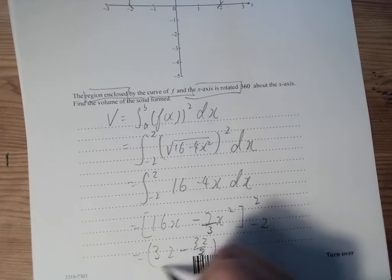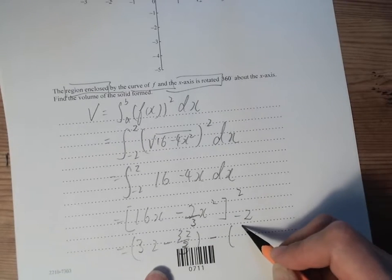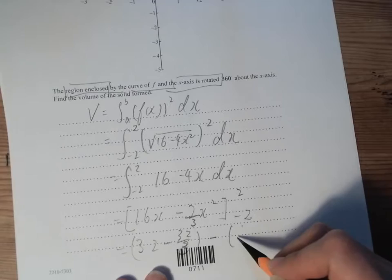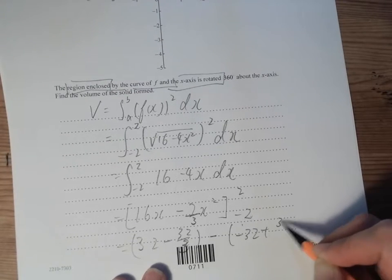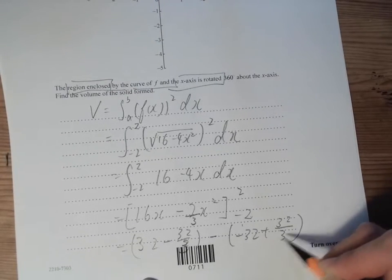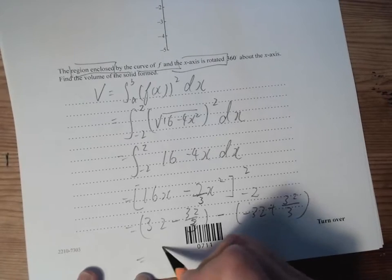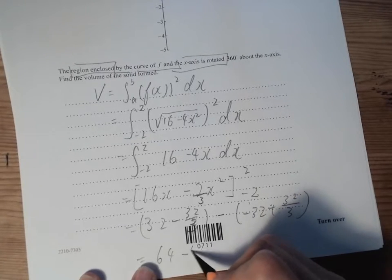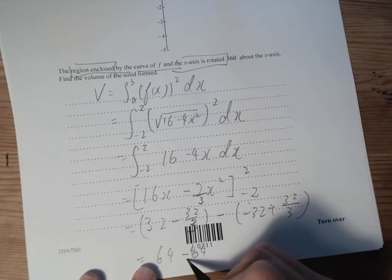So it should be over 3, minus negative 2. So we have -32 plus 32 over 3 there. We sum them up, so we get 64 minus 64 over 3.